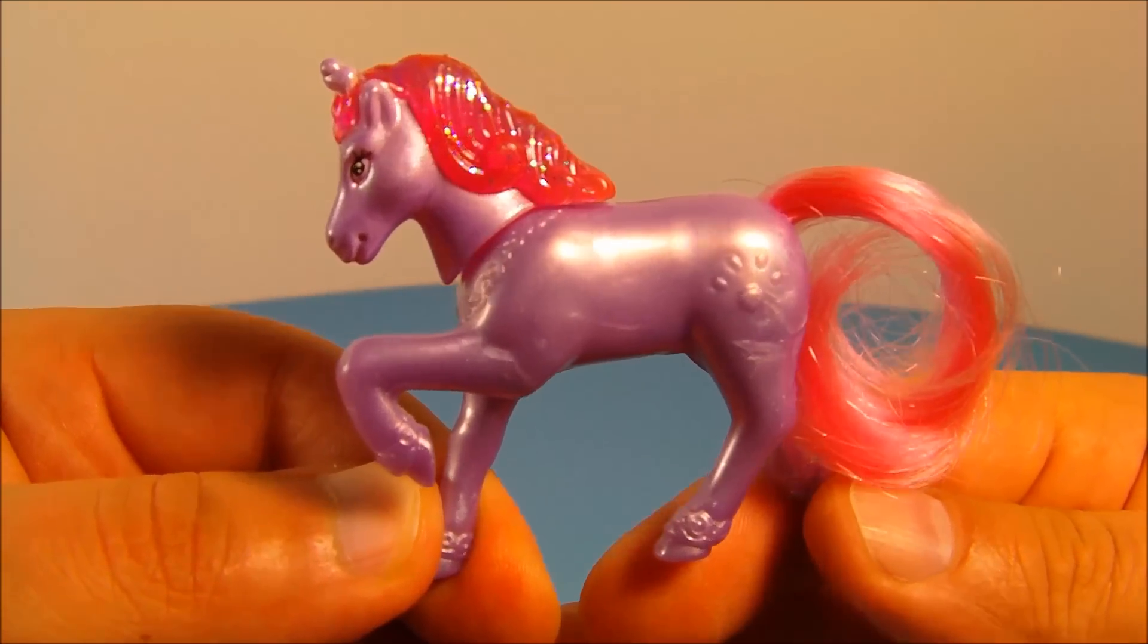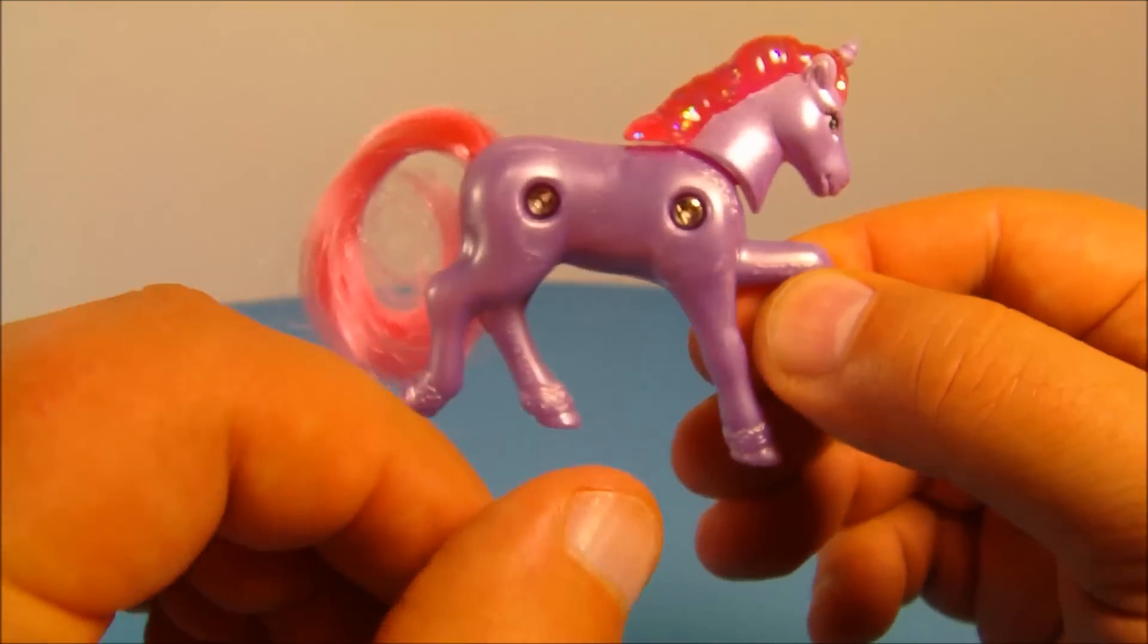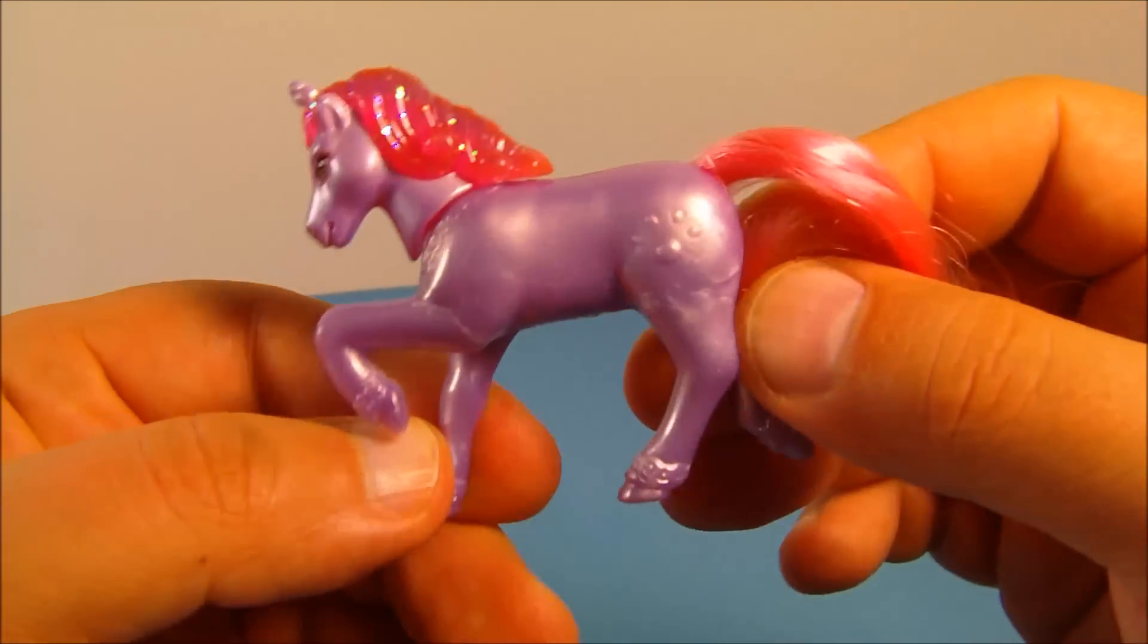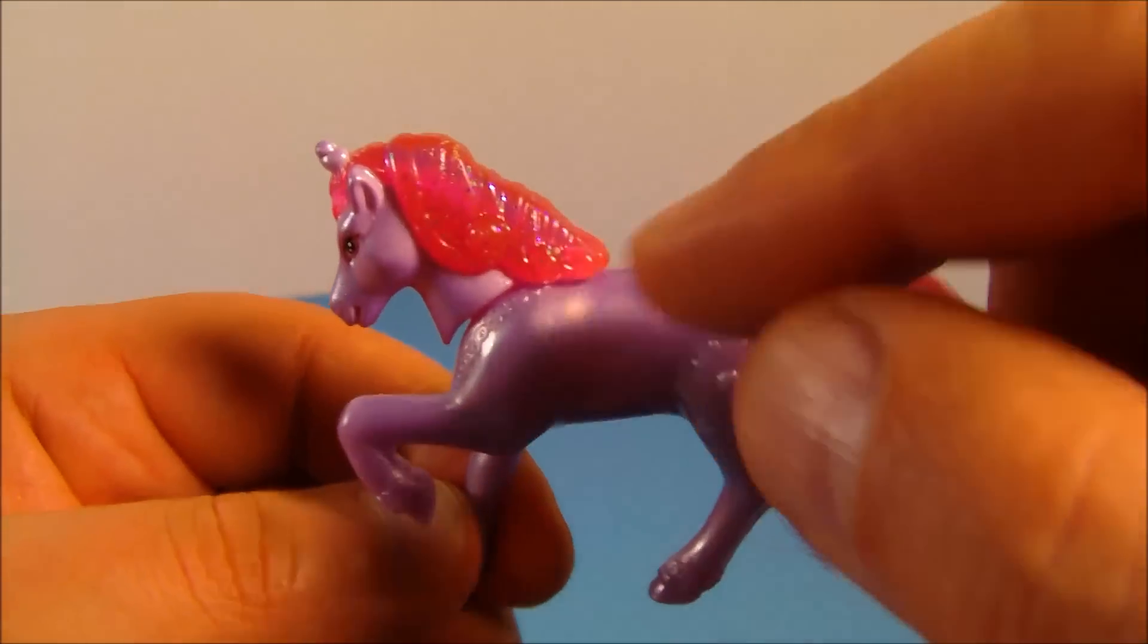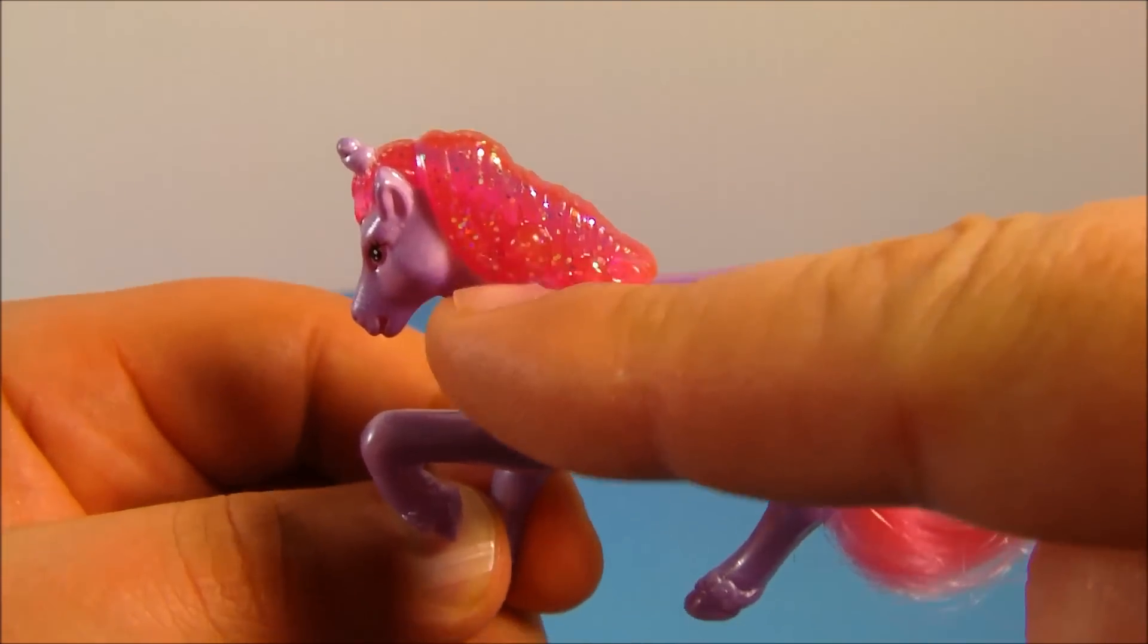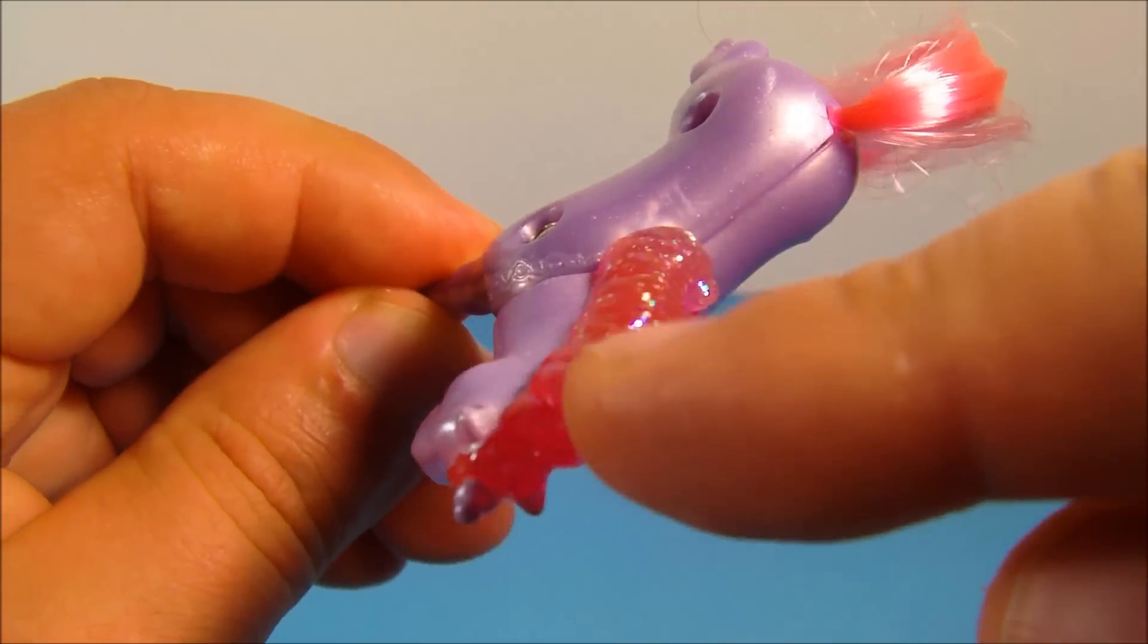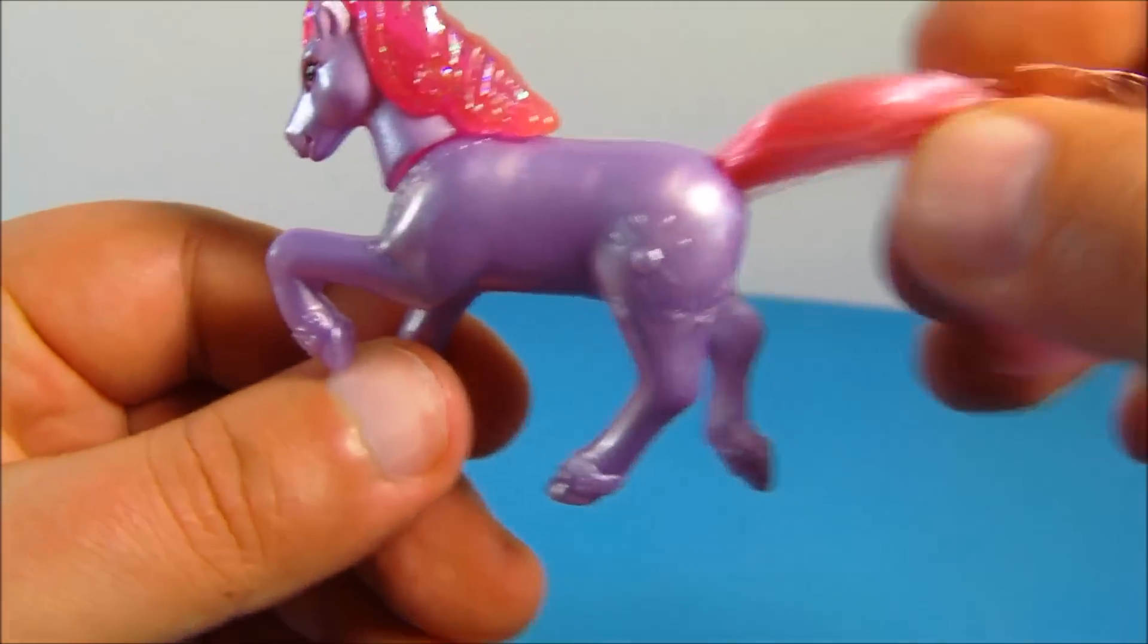Littlest Pet Shop number two is the unicorn. Look at this. This is great. It's this beautiful looking toy. I really like this. Color purple, nice and shiny. And then in the mane here, you can see it's clear translucent plastic, and there's all kinds of sparkles in there. Look at how that just shines. I love that.